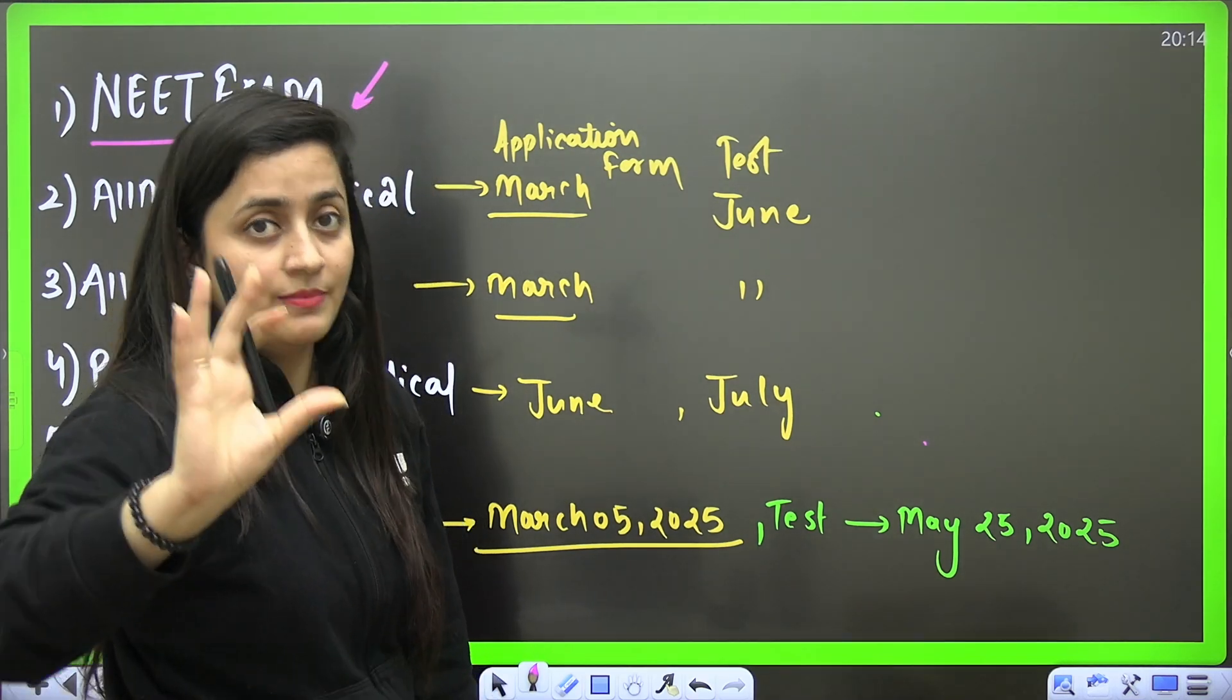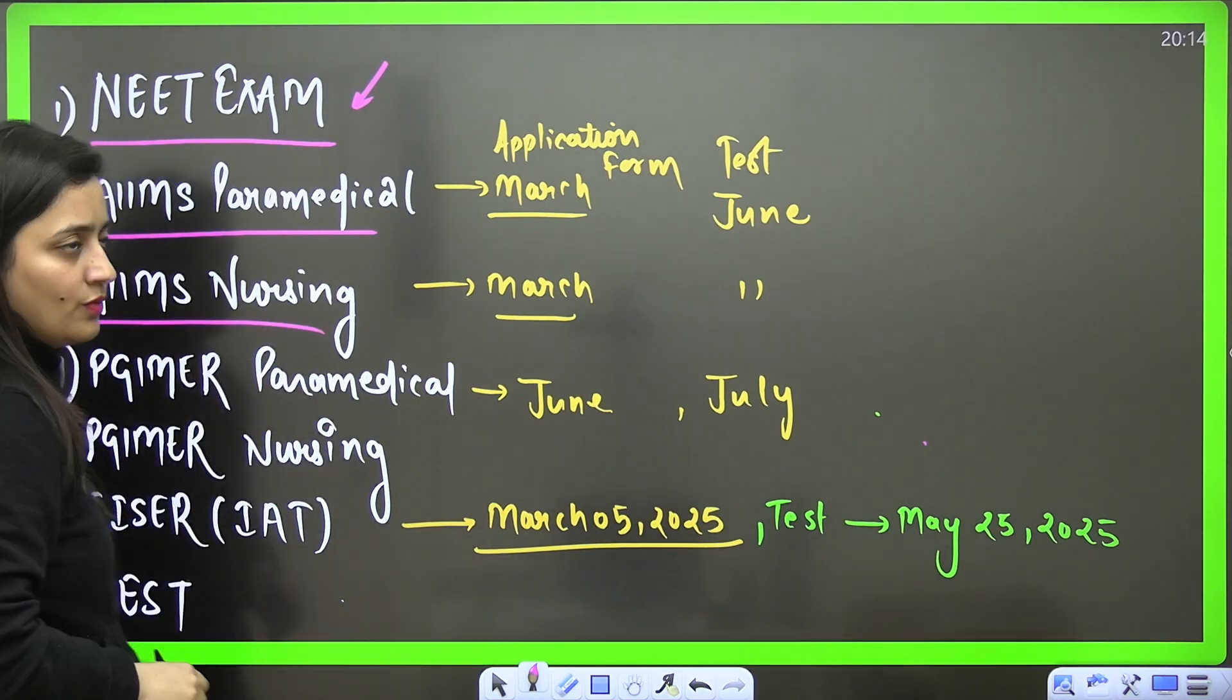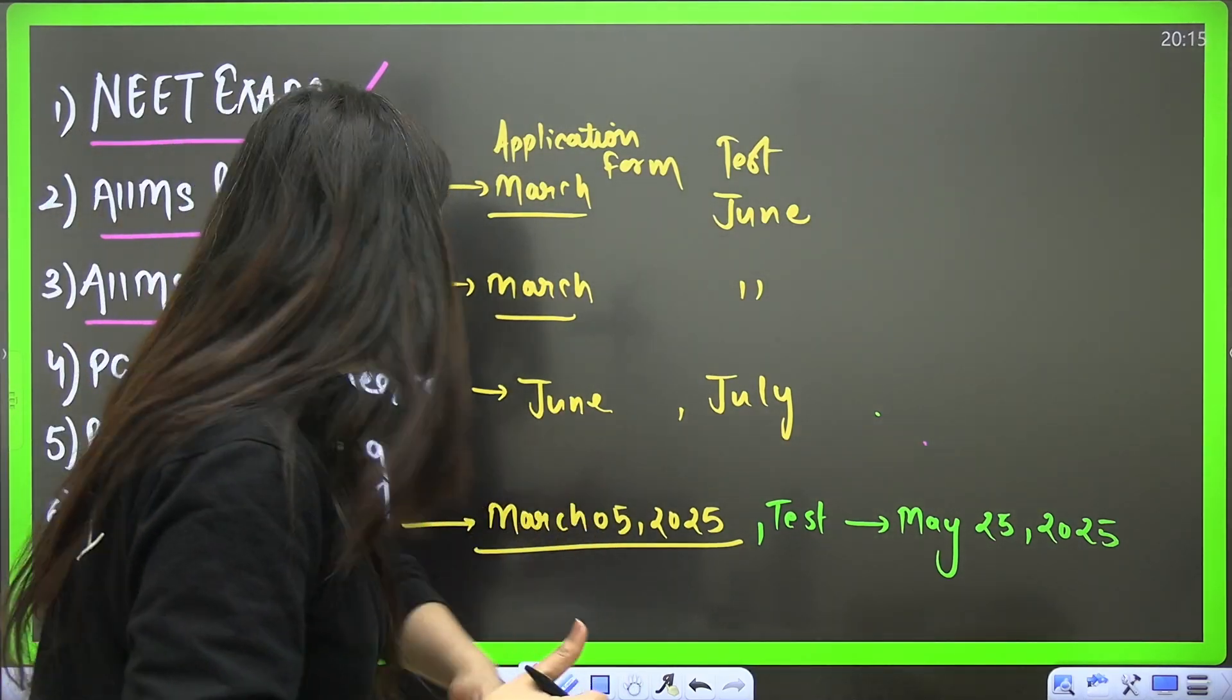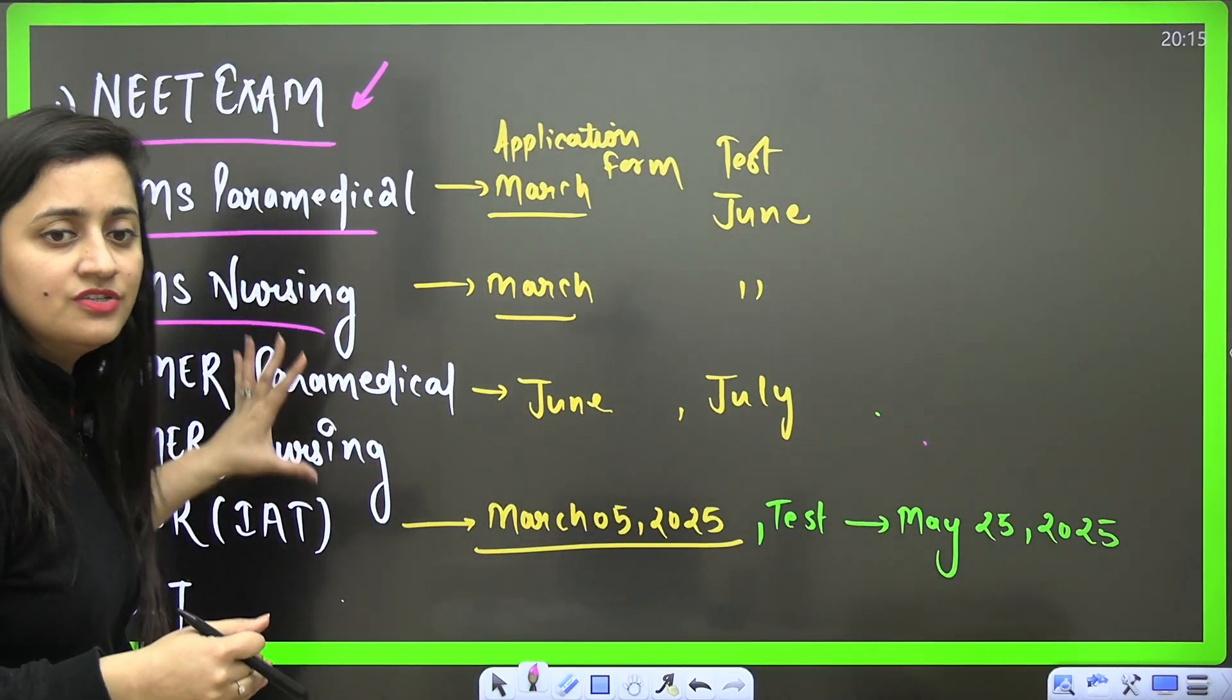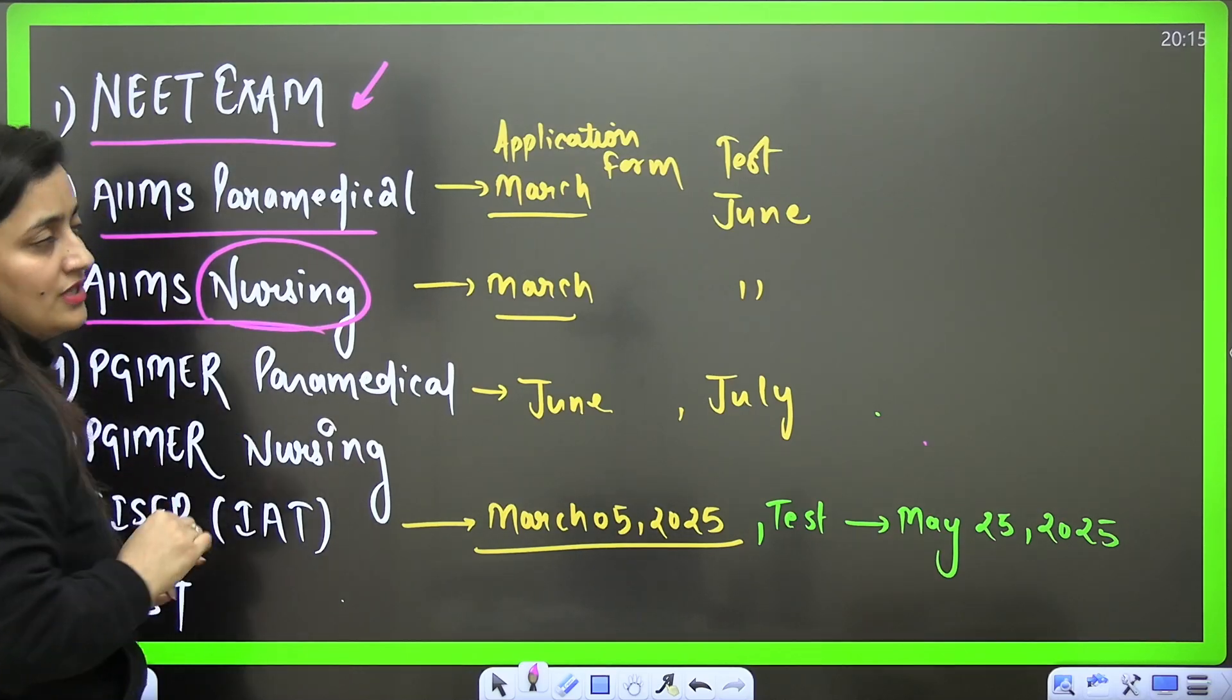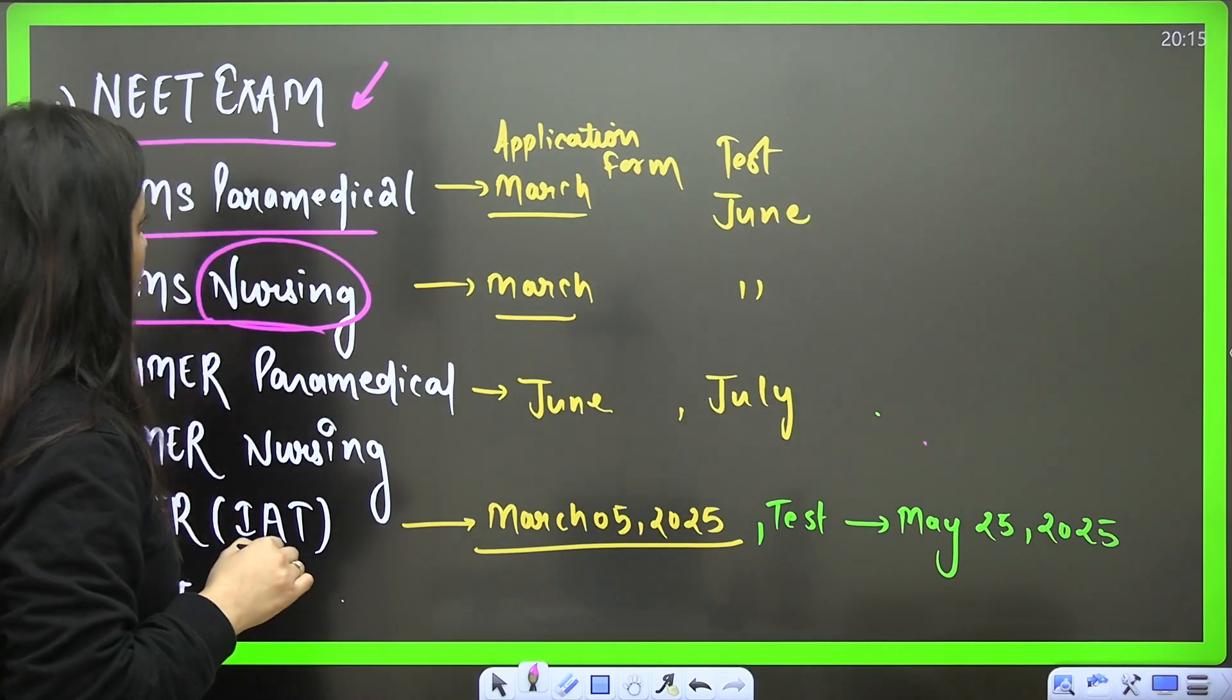Number one, then students, if you want to go to the AIIMS, right? MBBS is not the only course. Other than that, you have the paramedical courses, you have the nursing courses as well. So when it comes to nursing, nursing is only for the girls, but when it comes to the paramedical exams, girls and boys both can fill it.